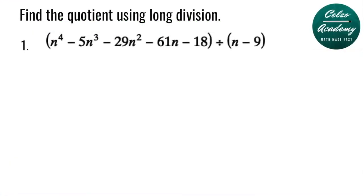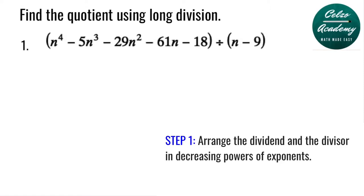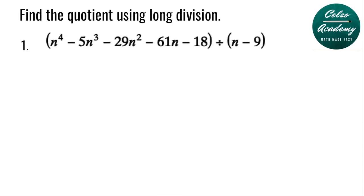Find the quotient using long division: n to the 4th minus 5n cubed minus 29n squared minus 61n minus 18, divided by n minus 9. First we need to check both the dividend and divisor to make sure that the powers are arranged in descending order. Both are already arranged in descending powers, so now let's set up the division problem. Our divisor, n minus 9, will be outside the division sign.